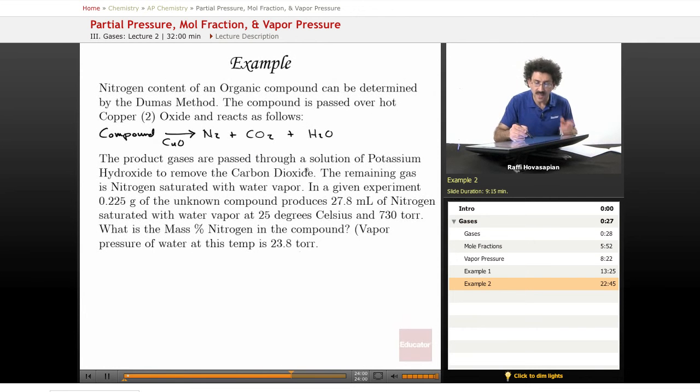The product gases are passed through a solution of potassium hydroxide to remove the carbon dioxide. So you produce three gases, and then you pass it through potassium hydroxide that binds the carbon dioxide and gets it out of the way. The remaining gas is nitrogen saturated with water vapor. That just means nitrogen and water vapor in the same gas mixture. In a given experiment, 0.225 grams of the unknown compound produces 27.8 milliliters of nitrogen saturated with water vapor at 25 degrees Celsius and 730 torr. The vapor pressure of water at this temperature is 23.8 torr.